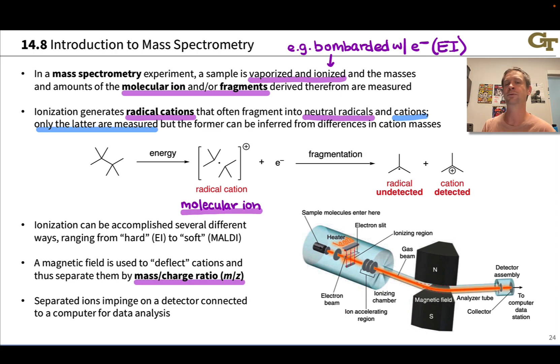In some cases we can get a plus two charge, in which case to get the actual mass of the fragment we need to double the mass to charge ratio.